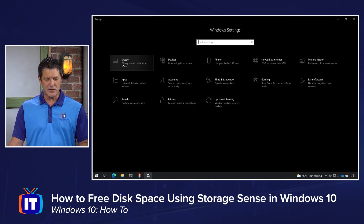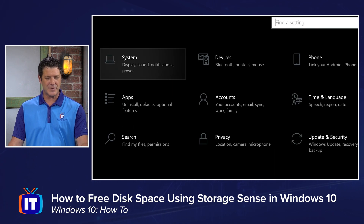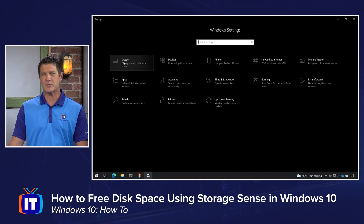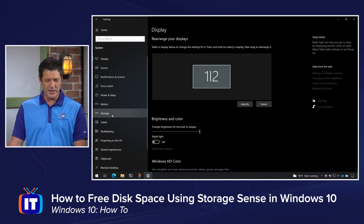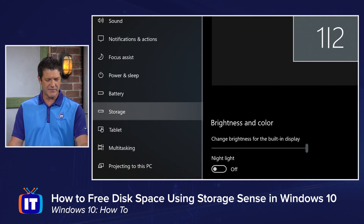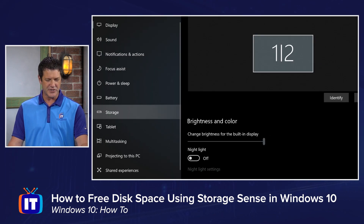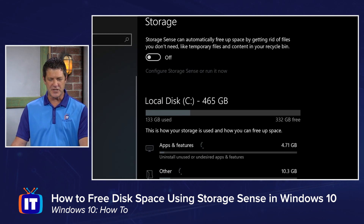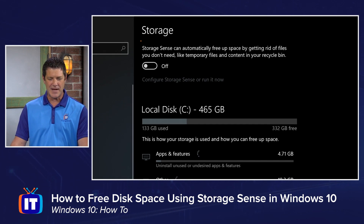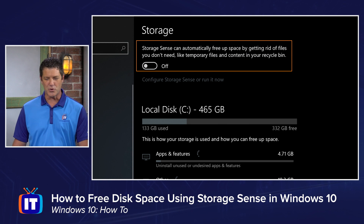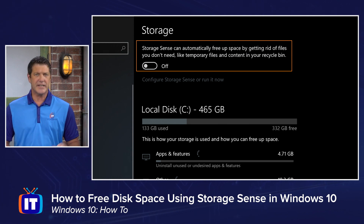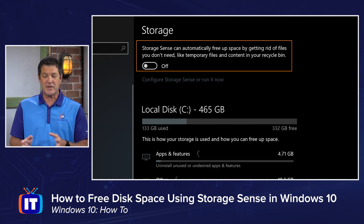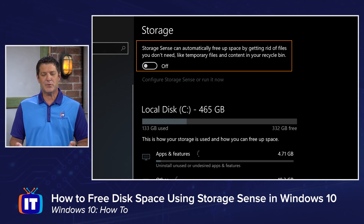I'm going to go to System in the top left-hand corner, and in here we're going to go to Storage in that navigation tree. When you click on Storage, the first thing you see right at the top is all about StorageSense. It tells you what I was just saying — free up space by getting rid of files you don't need, like temporary files.